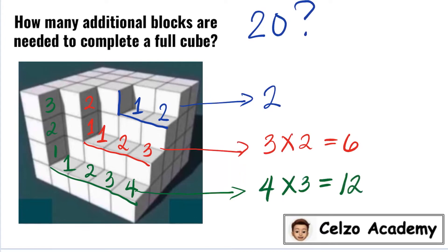This is the reason why 90% of people got 20 because you have 2 plus 6 plus 12 and that is equal to 20. But is that the right answer?